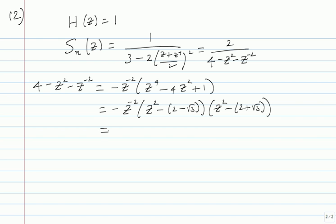The next identification is to figure out which roots are inside the unit circle. With a calculator, you can easily check that 2 minus root 3 is less than 1 — so even after taking the square root it will be less than 1. So this part corresponds to the minimum phase factor, and the other term corresponds to maximum phase. It's enough to find the minimum phase component; the maximum phase component will work itself out, and then you can figure the constant out.